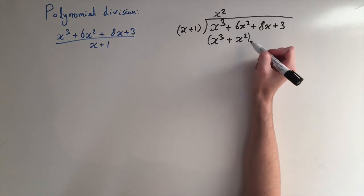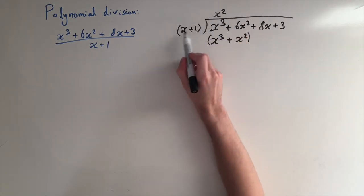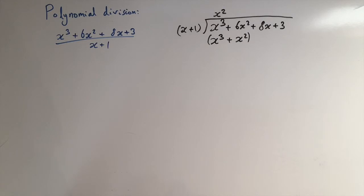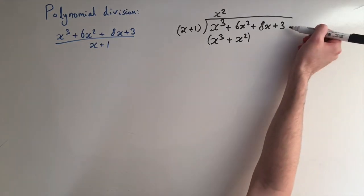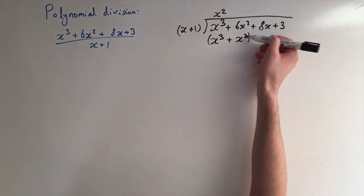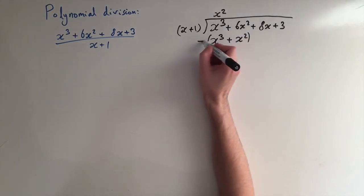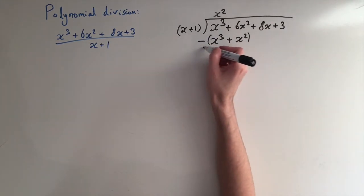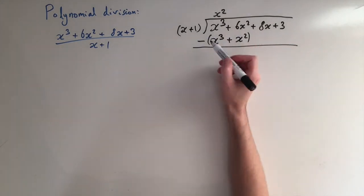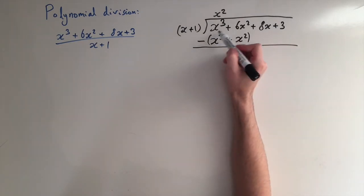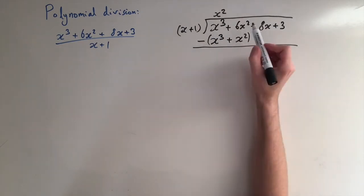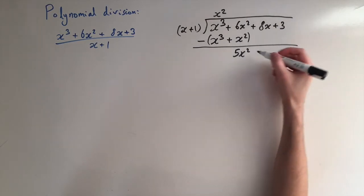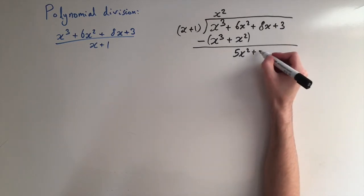This is what we got when we multiply x squared by x plus 1. The second step is to subtract this from our original polynomial — we write a minus sign and draw a line to show the subtraction. When we do that, the x cubed terms cancel out and we're left with 5x squared, and this stuff just drops down.